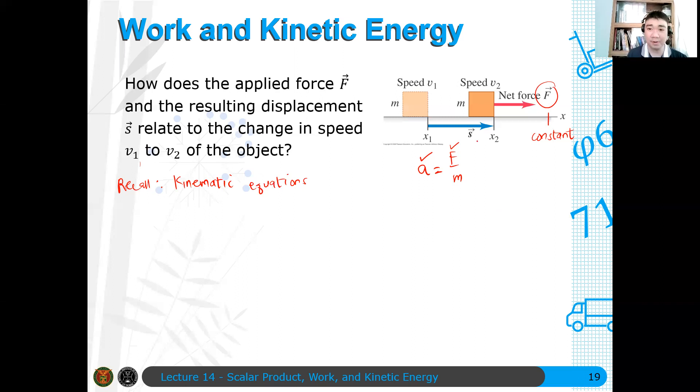So remember, if the velocity, in that case the speed of the object here is v2, and the speed of the object is v1 initially, then what is the relationship between v1 and v2? We know that v2 squared equals v1 squared plus 2a quantity x2 minus x1. Tama?